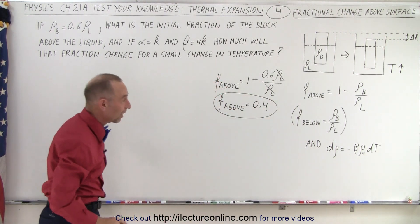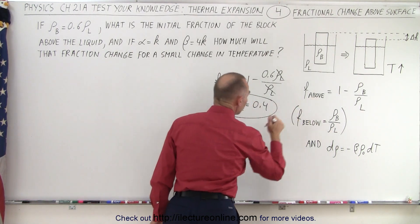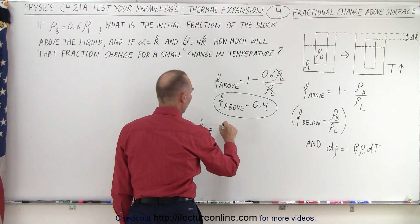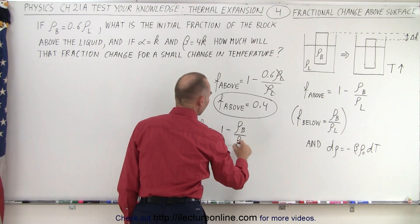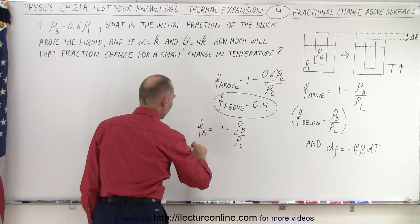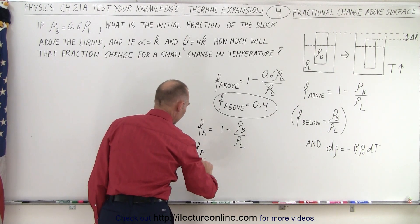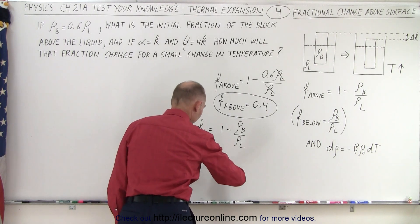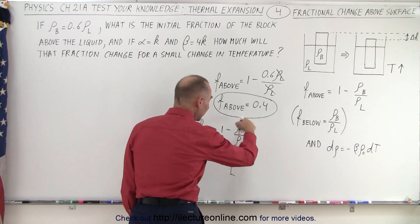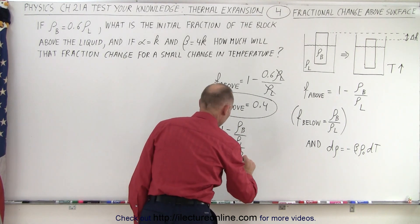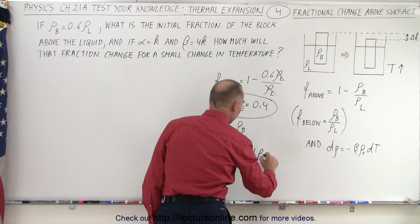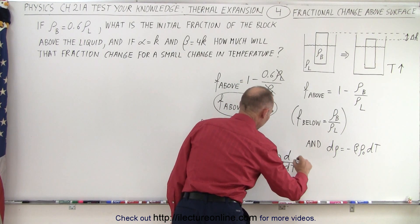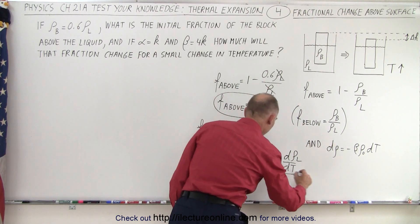Now, how will that fraction change? Using the equation again, the fraction above (f sub a) equals 1 minus the density of the block divided by the density of the liquid. Taking the derivative, the change of the fraction above with respect to temperature equals zero from the derivative of 1, minus the derivative of the fraction — which means: the denominator times the derivative of the numerator with respect to temperature, minus the numerator times the derivative of the denominator with respect to temperature, all divided by the denominator squared.